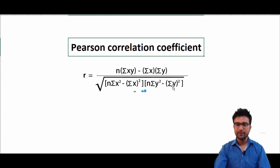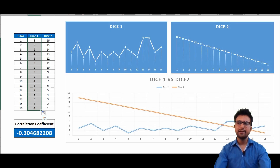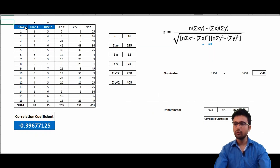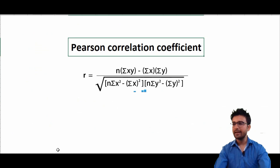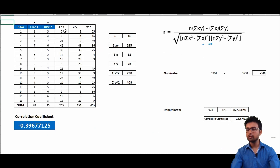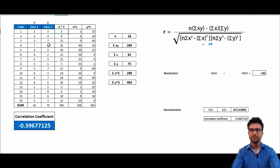This formula doesn't give me any intuition on its own, so let's put the same number series and try to apply this formula on top of it. Here I have created one more table with x and y — these are the same outcomes we had earlier. For calculating the formula values, I am also computing the numerator and denominator parts. I need to find the value of x times y, so I'm multiplying: 1 and 5 gives 5, 2 and 4 gives 8, 3 and 7 gives 21. Then I am squaring the dice one outcomes and squaring the dice two outcomes.